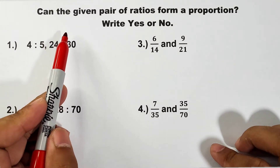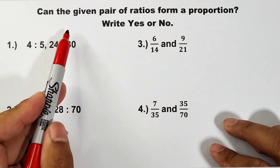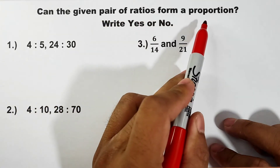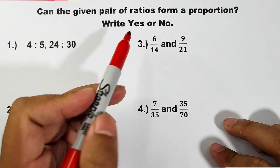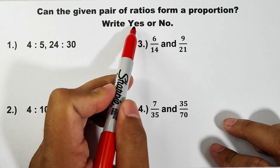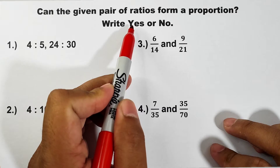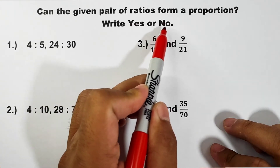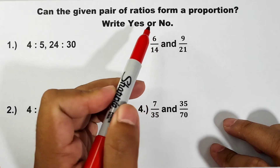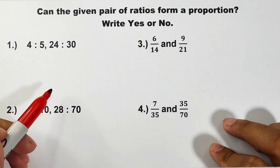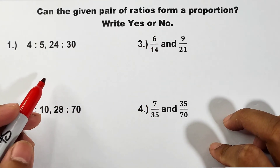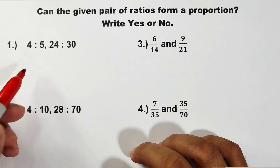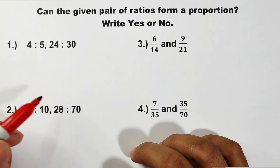In this part of the video, we will try to check if a given pair of ratios can form a proportion. If they do, we write 'yes'; if they do not, we write 'no'. There are two methods to check this.